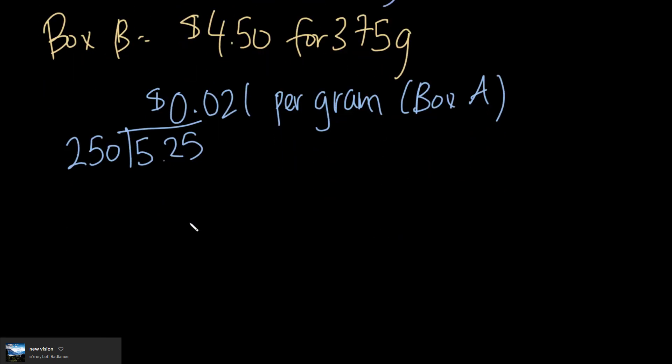Then Box B. I'm going to do the exact same thing. So Box B is $4.50 divided by 375 grams. Taking my calculator again, so that's 4.50 divided by 375. It's going to give us 0.012 per gram, and this is now Box B.